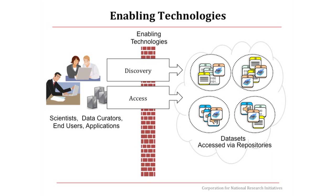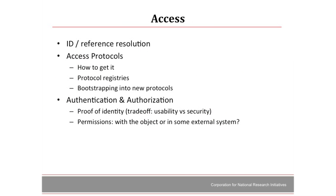If you know what you're after, now you have to get it — that's the second set of problems. You have to resolve a reference or identifier to get to the data. You have to know how to get it, which includes protocol registries and bootstrapping new protocols. Authentication and authorization: who am I, and once you believe who I am, do I have permission to use your stuff? And where are the permissions? Are the permissions with the data, or are they in a container so that if you move or copy the data, you lose all that? That's a current problem.